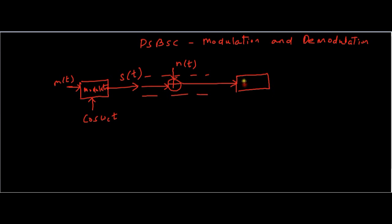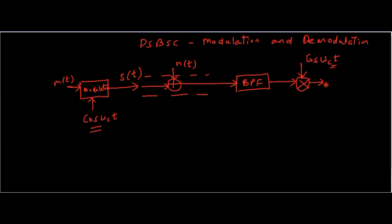At the receiver side we have a bandpass filter to attenuate noise and unwanted signals — we are only interested in the specified message bandwidth, so this attenuates all high-frequency signals. After that, we use coherent detection at the receiving side. For coherent detection we send it to the product modulator, where one input is our modulated signal S(t) and the other is the local carrier cos(ωc·t), which is the same as the transmit carrier. After this we send it to the low-pass filter. This is the output — our required message signal. So we need to define the figure of merit for this DSB-SC system.